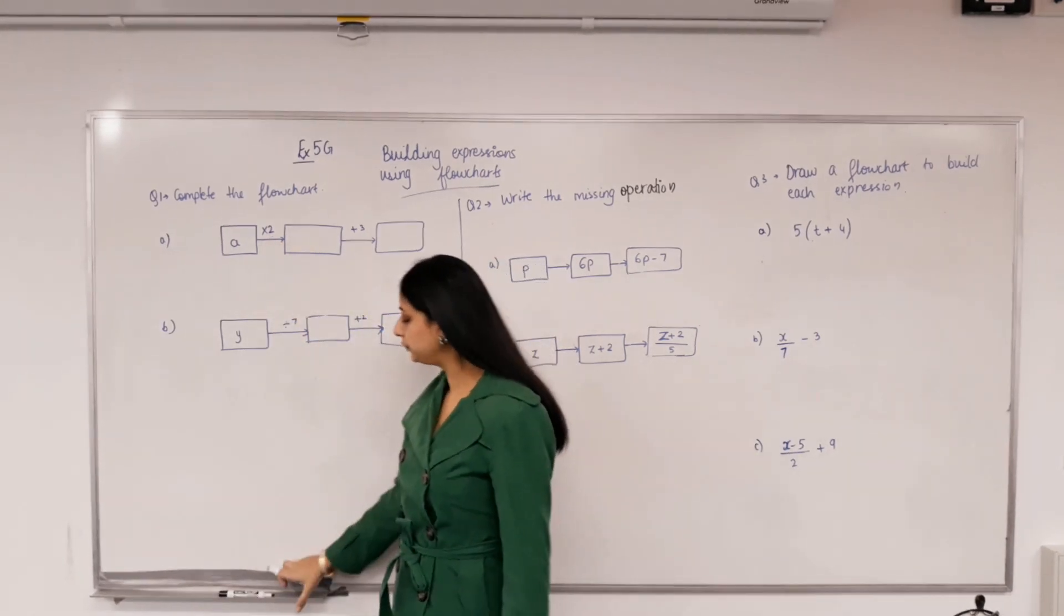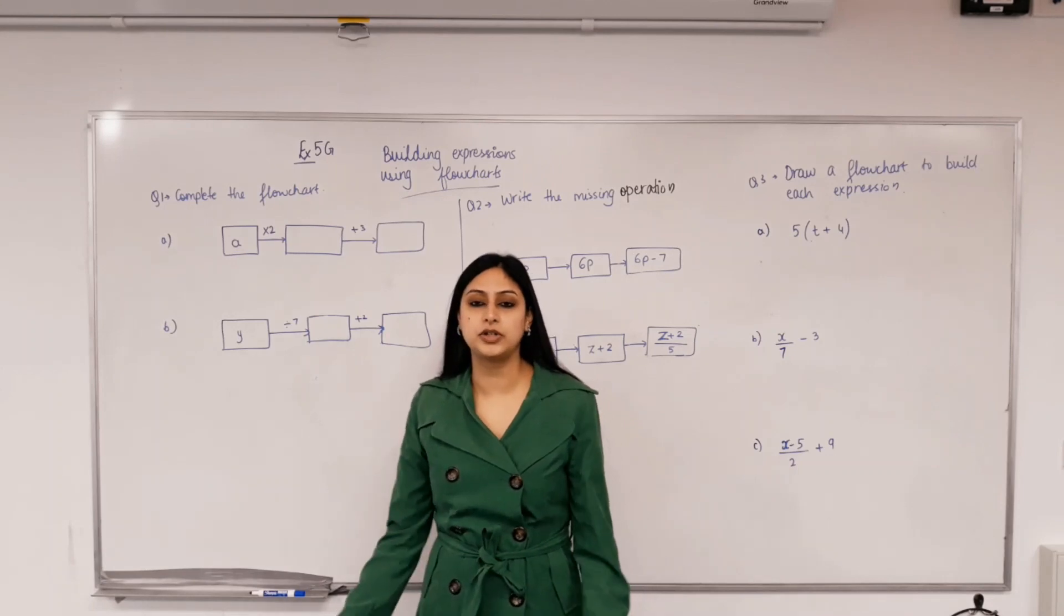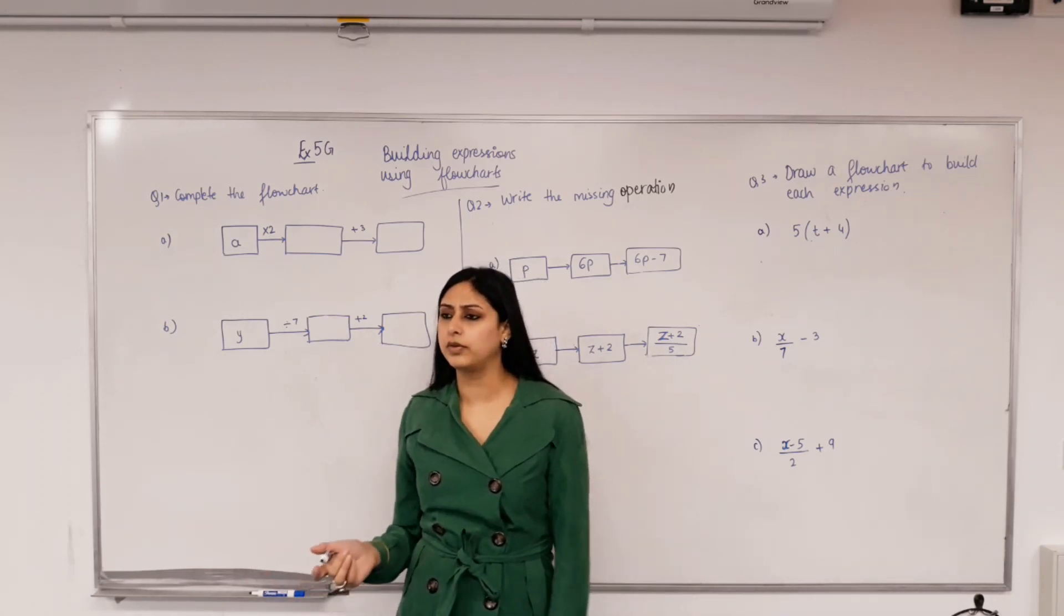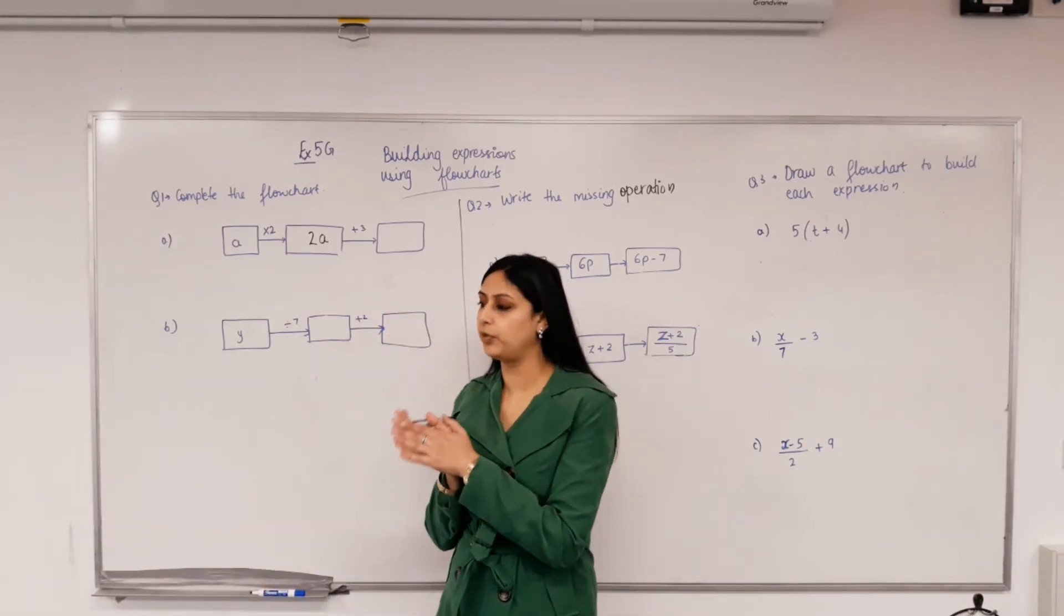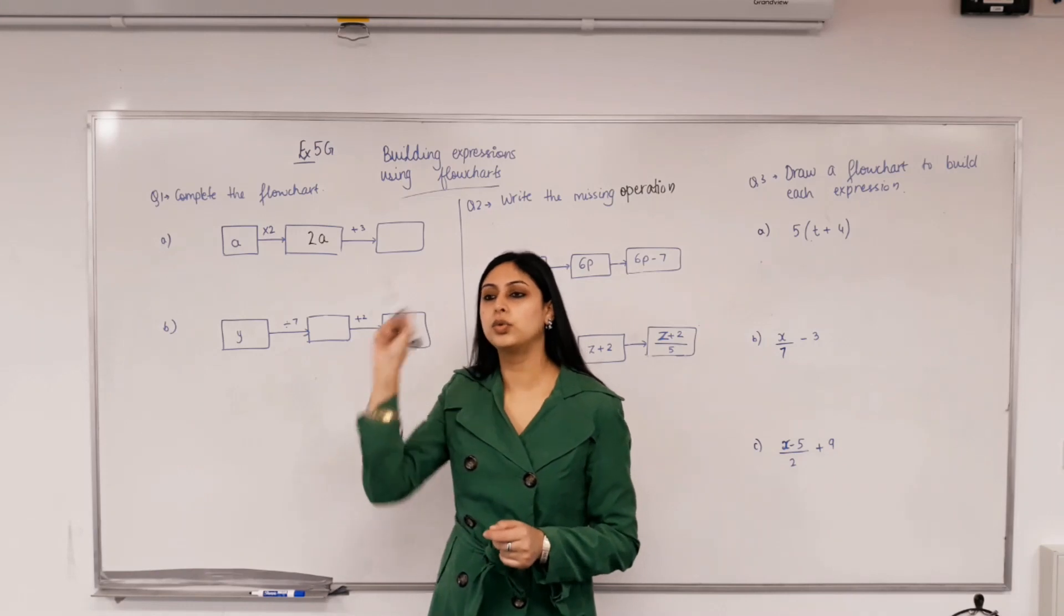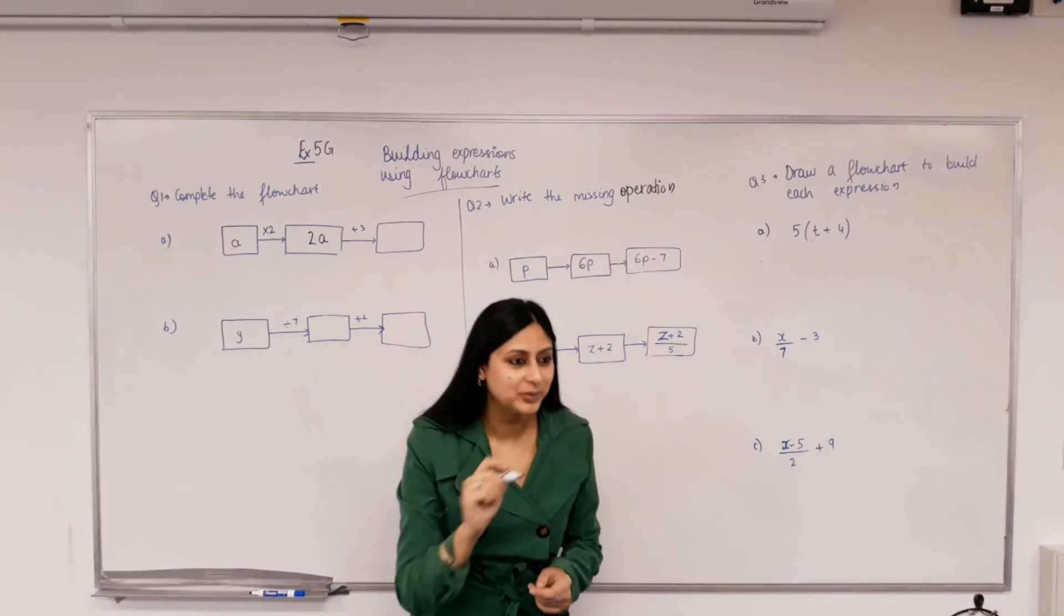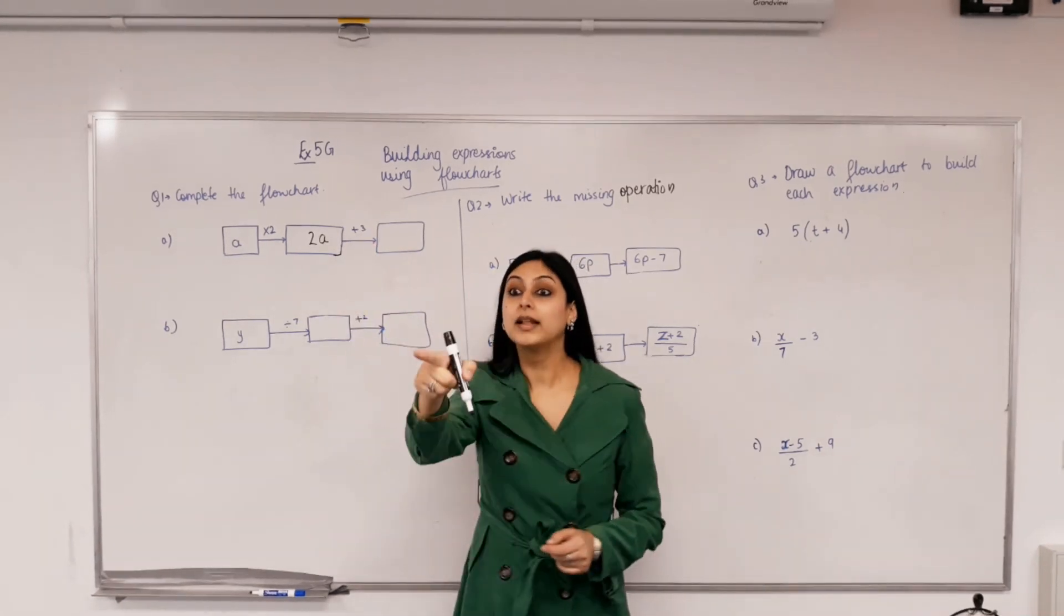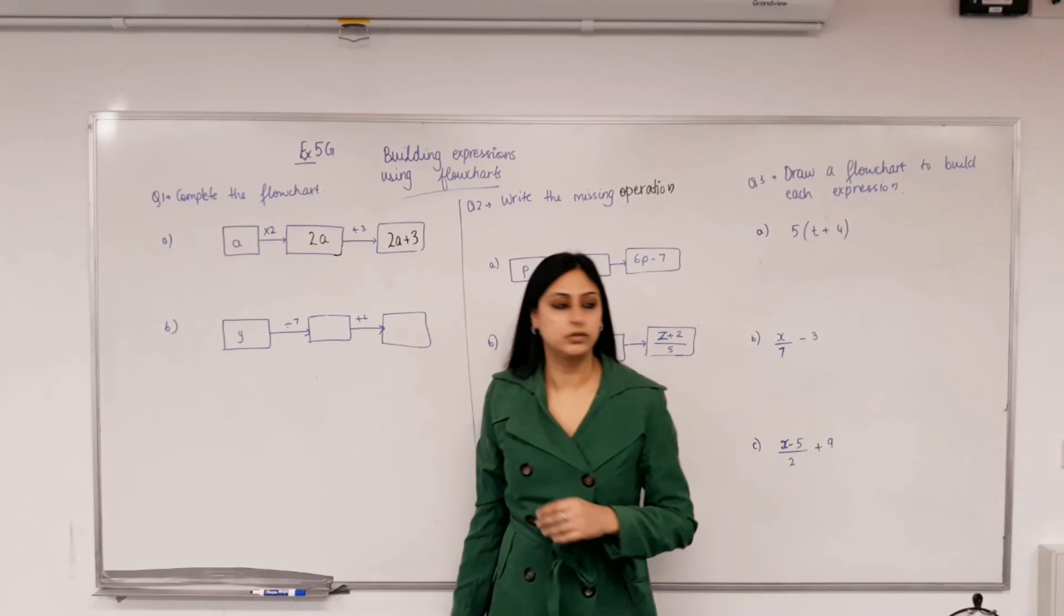What do I need to do with a? Times. So if I times a by 2, what is the expression that I get? 2a. Can I write it as 2a or a2 or a times 2? What's the correct way? 2a. When we need to multiply a number with a pronumeral, we don't need to put the times sign, and what comes first, the number. So we don't have to write 2 times a, we just write 2a. Now we need to add. What do we need to do to 2a? Add 3. Well done, excellent. So we added 3 to it, right?